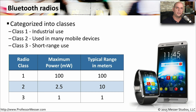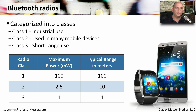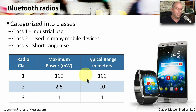A very common wireless communication type on our mobile devices is Bluetooth. The Bluetooth radios are categorized into different classes: class 1, class 2, or class 3. Class 1 is really designed for industrial use and we don't see this on our mobile devices. It outputs a maximum power of 100 milliwatts and has a range of about 100 meters.